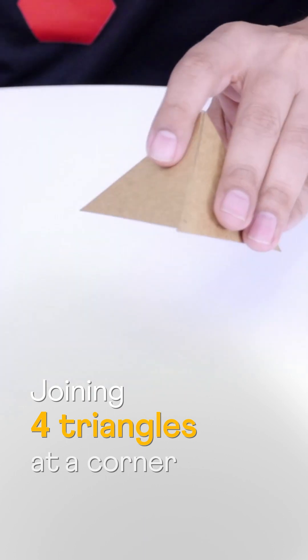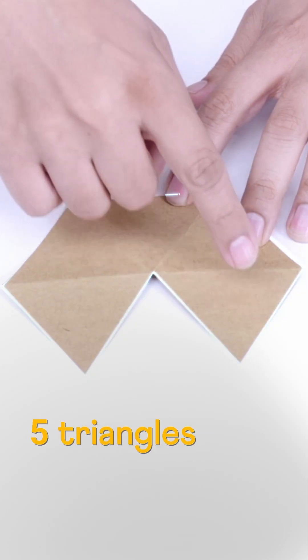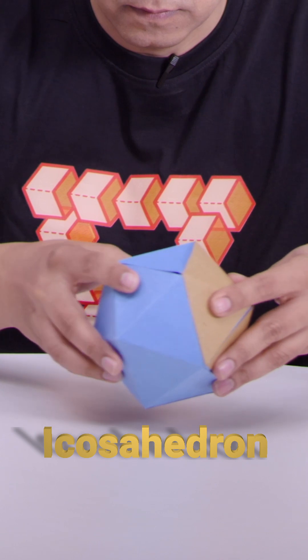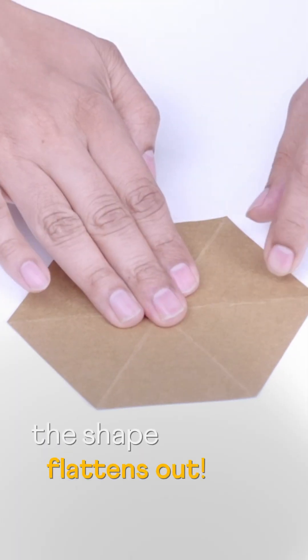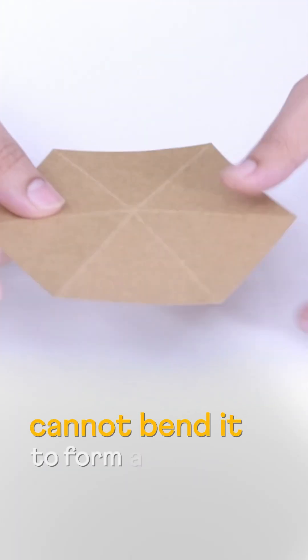Joining four triangles at a corner gives an octahedron. Five triangles at a corner makes an icosahedron. Six triangles, the shape flattens out and we cannot bend it to form a 3D shape.